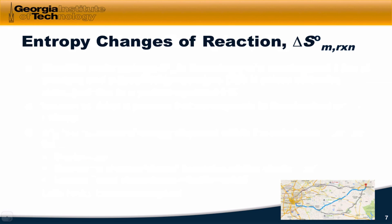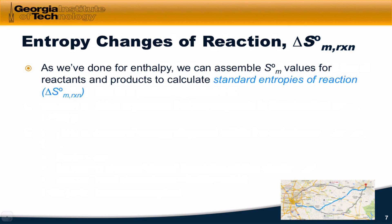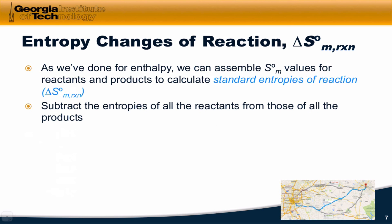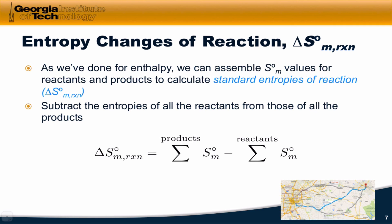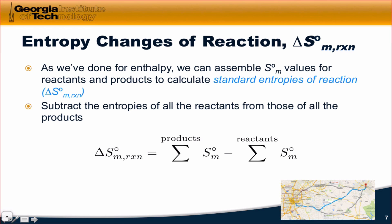With these standard molar entropies in hand, we can now assemble entropy changes of reaction, delta S_m of reaction. The idea is to apply the same Hess's law type concept to the absolute standard molar entropies — we subtract the entropies of all the reactants from those of all the products. Delta S of reaction equals the sum over all products of their standard molar entropies minus the sum over all reactants of their standard molar entropies. It's very important to respect stoichiometry: if you have a coefficient of two or three in front of a product, you need to multiply its standard molar entropy by that corresponding coefficient.